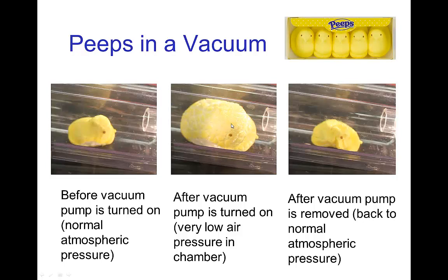In that process, some of those air pockets start to burst. So when we turn off the vacuum pump and let the air return to normal atmospheric pressure, the peep is collapsed because many of the air pockets burst.